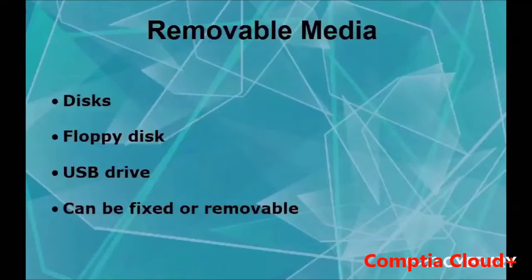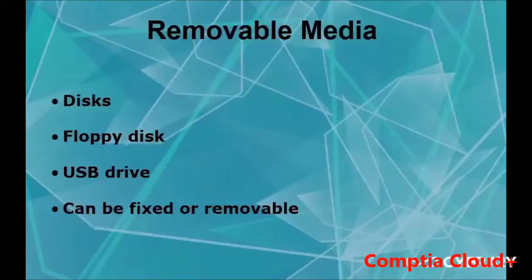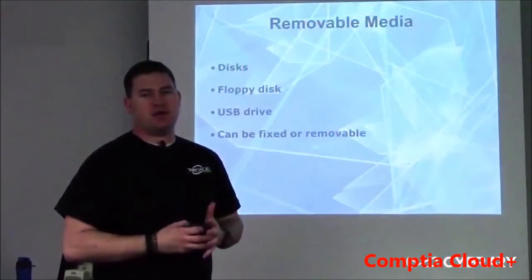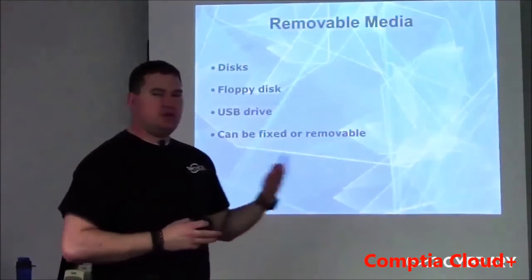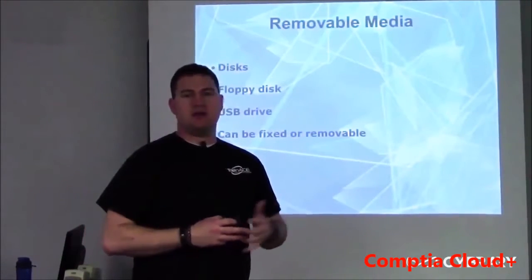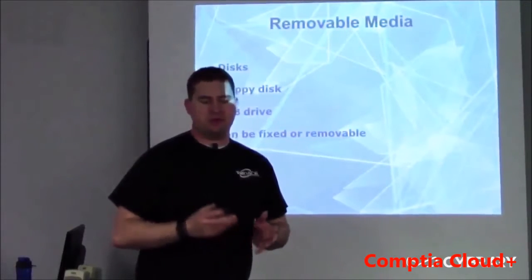USB drives are replacing just about everything. Why carry a fragile CD whenever you can just load files onto a thumb drive and take it wherever you need? A CD can only hold less than a gig, whereas a thumb drive can hold sometimes up to 64 gigs. Removable media can either be fixed — meaning it's part of the PC and you have to take something out to remove it — or removable, using a USB drive or certain ports on the motherboard.